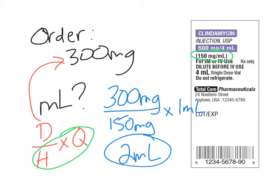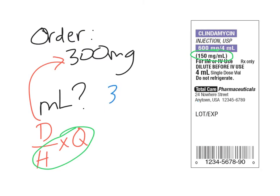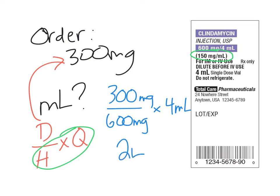Just to show you that it would be the exact same thing should you have chosen to use the 600 and the four — if we took 300 divided by 600, since they're both in milligrams there's no converting needed. 300 divided by 600 gives us 0.5, because that's half. If we take 0.5 and then multiply by four, 0.5 times four is also two milliliters. So on that particular label it doesn't matter which dosage strength you use, as they're both equivalent to one another.